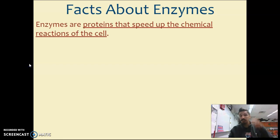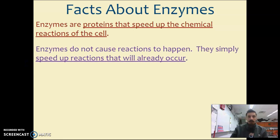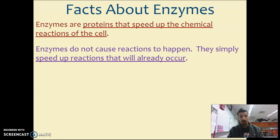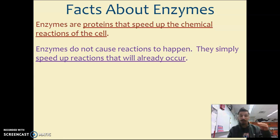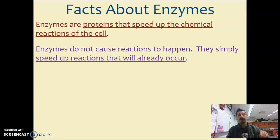Enzymes are just proteins that speed up chemical reactions. That's the definition of a catalyst. Enzymes do not cause the actual chemical reaction to happen. The chemical reaction would happen whether the enzyme was around or not. The enzyme lowers the amount of energy needed for the reaction to take place. That's how an enzyme speeds up these chemical reactions, by lowering the energy required. We call that energy required activation energy. Enzymes catalyze chemical reactions by lowering activation energy.